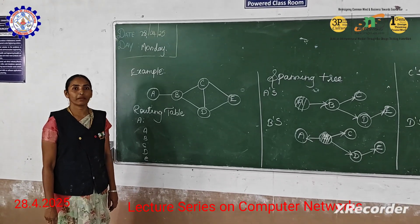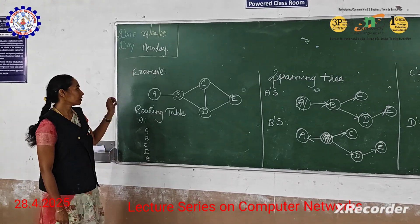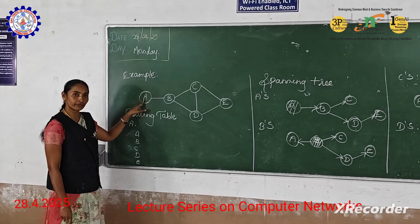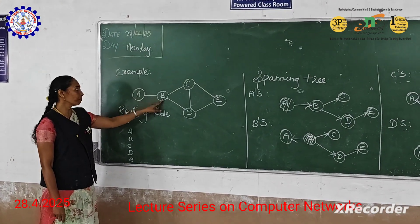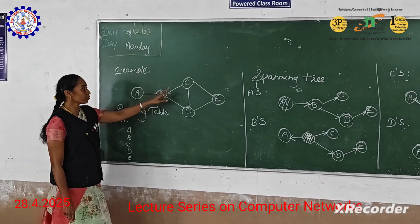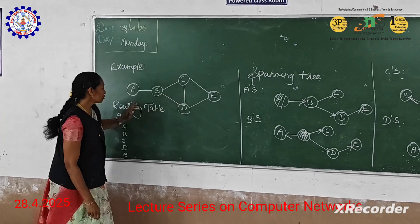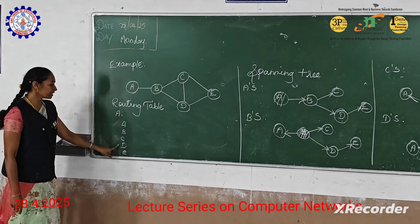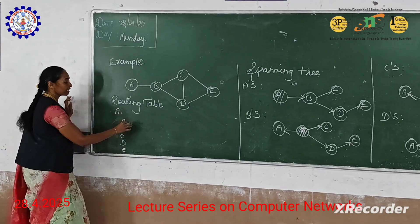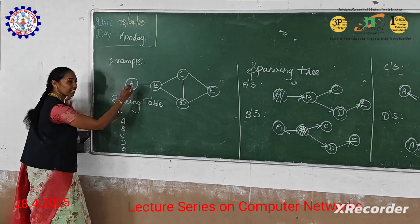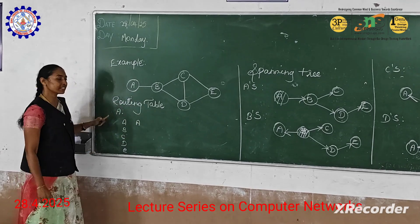I am going to calculate the routing table for A node. Here the legs are so small to reach from A node to B, A node to C, A node to D, and A node to E. So I have written all these nodes here. Then the path A to A — there is no path, so simply write as A.